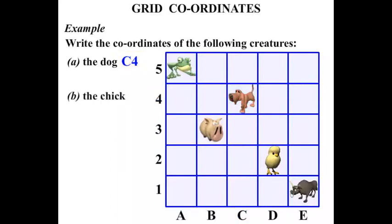What about the chick? Okay, there's the chick there. Which column is it in? Well, it's in the D column and it's in the row of number 2. So D and 2. We're going to write D2.